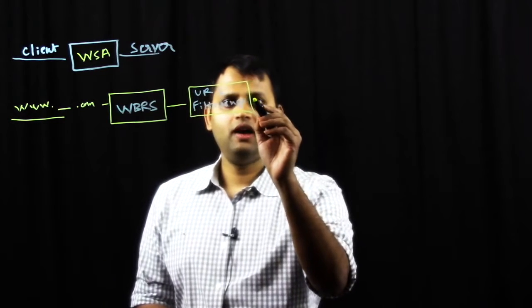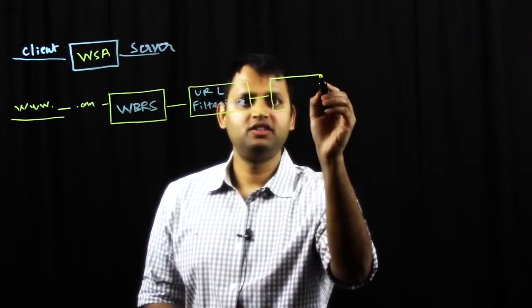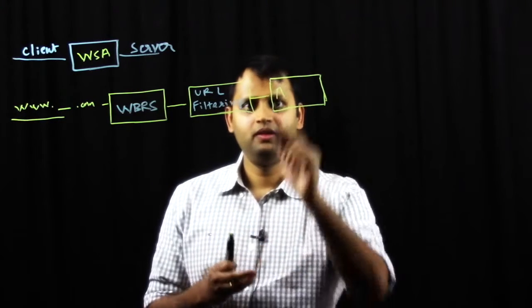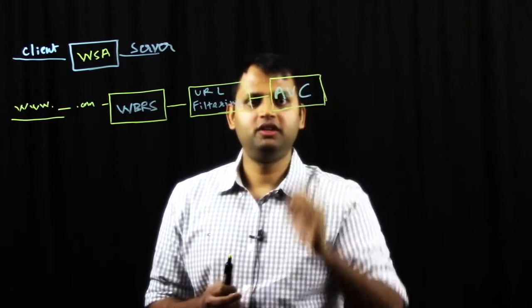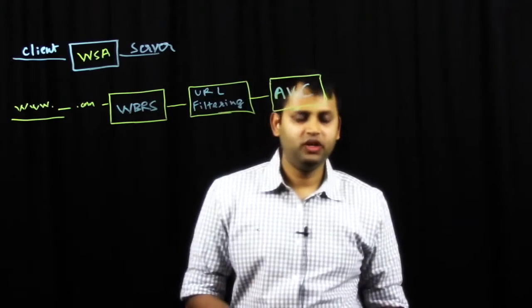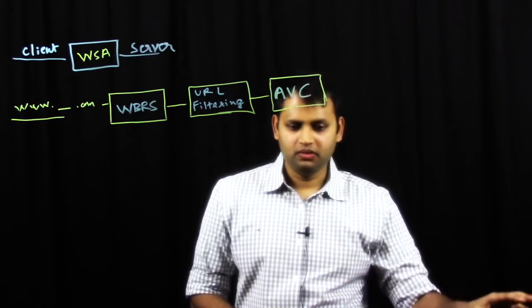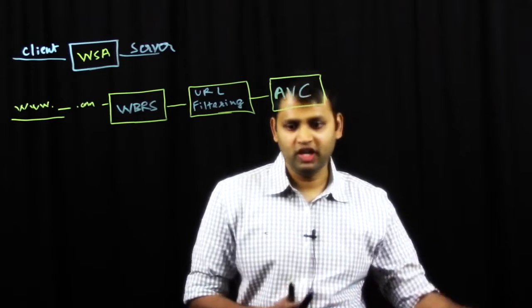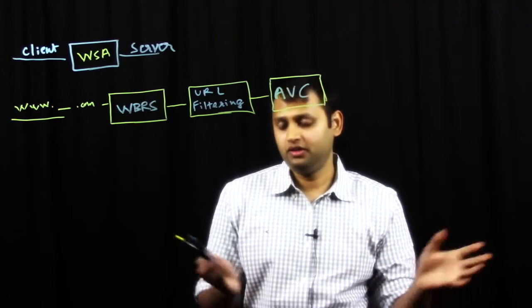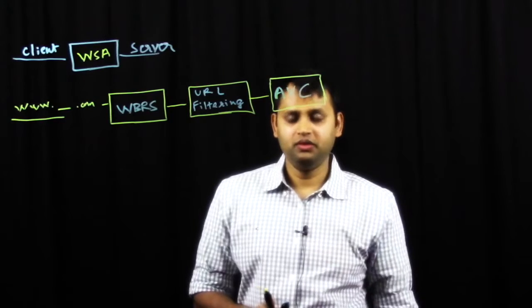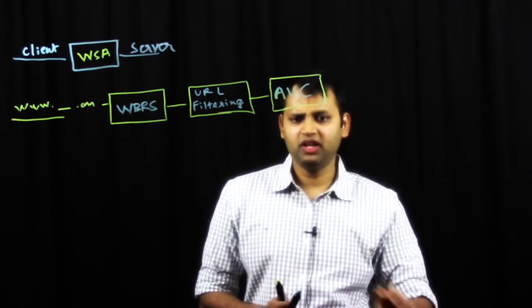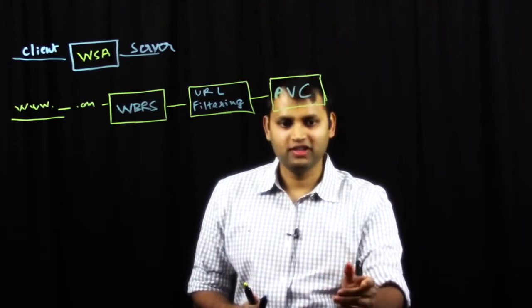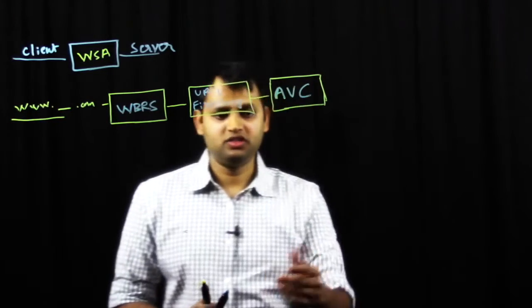Next up, we have very similar to URL categorization, but deeper packet inspection, what we call as application visibility and control, or AVC. Right here, you can basically say certain aspects of popular applications like Facebook, Facebook games that would typically go to third parties and may have malware in it, you could block out certain sections of applications like that, either the complete applications or certain functions of an application like chat or file transfer that could be another vector for your system to get infected.